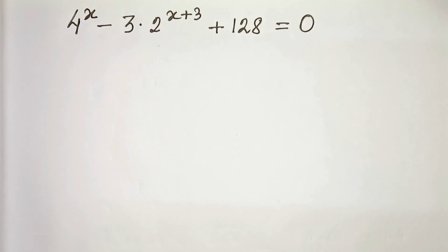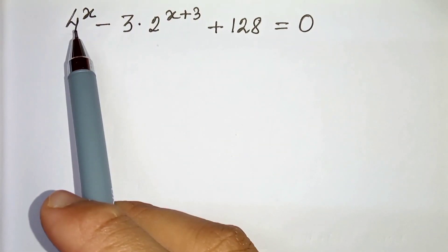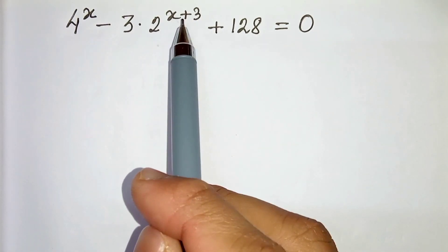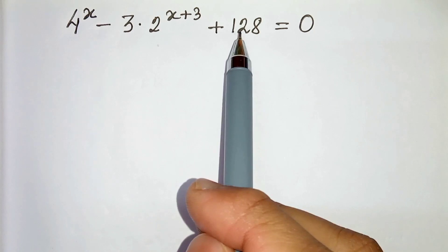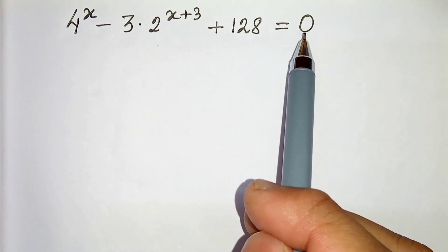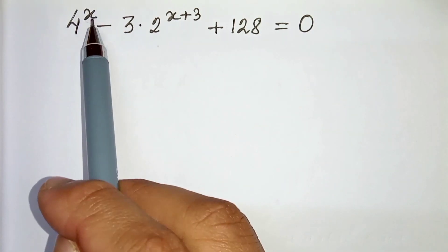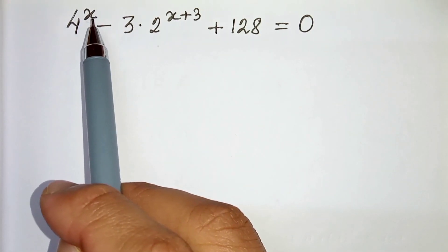Hello everyone. In this video we have 4 to the power x minus 3 times 2 to the power x plus 3 plus 128 equals 0. We have to find the value of x. So let's start.